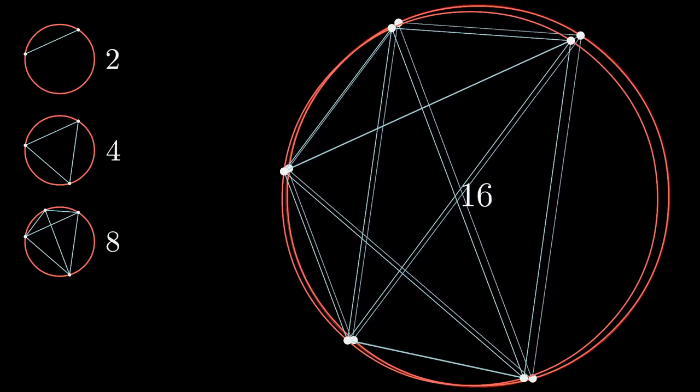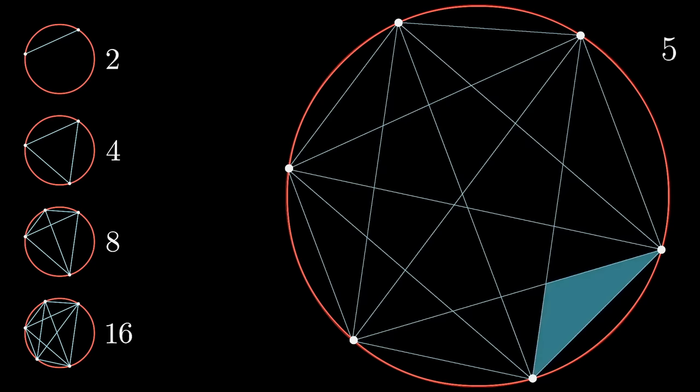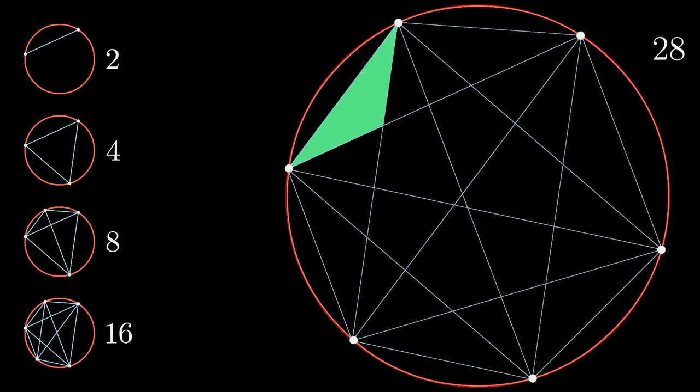Naturally you can guess what might come next, but would you bet your life on it? Add a sixth point, connect it to all the previous ones, and if you carefully count up all the different regions, you end up not with the power of two you might have expected, but just one shy of it.